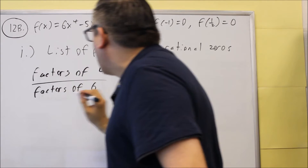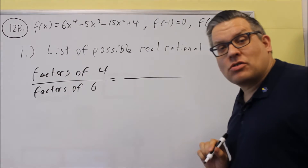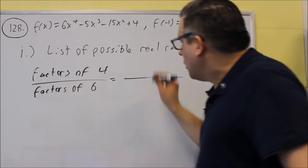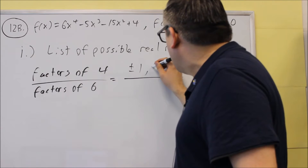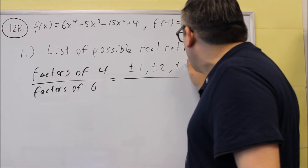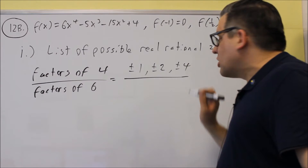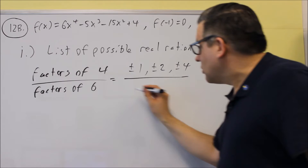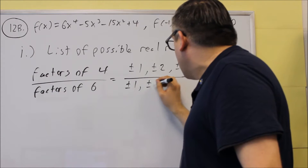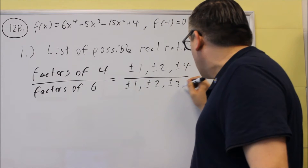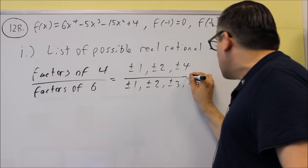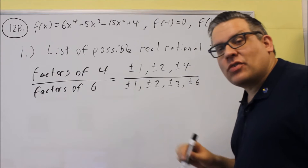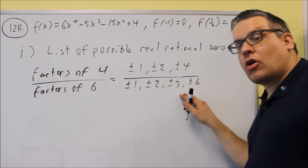A factor is a number that divides evenly into each of those. Numbers that divide evenly into four will be one, two, and four. On the bottom, factors of six: plus or minus one, two, three, and six — just go through the list and write down which ones divide evenly into six.